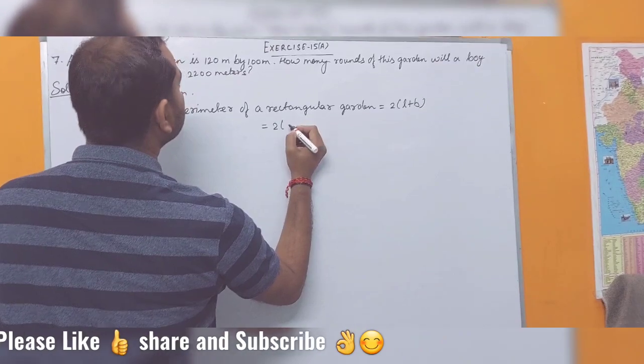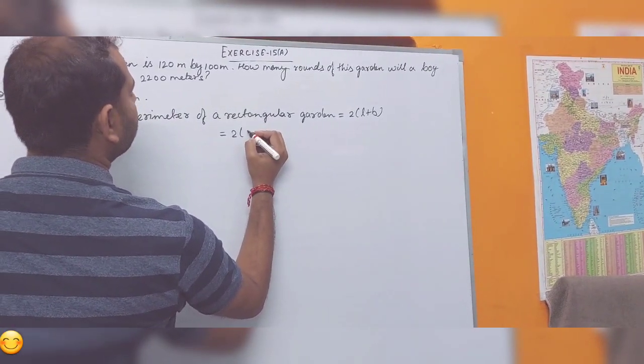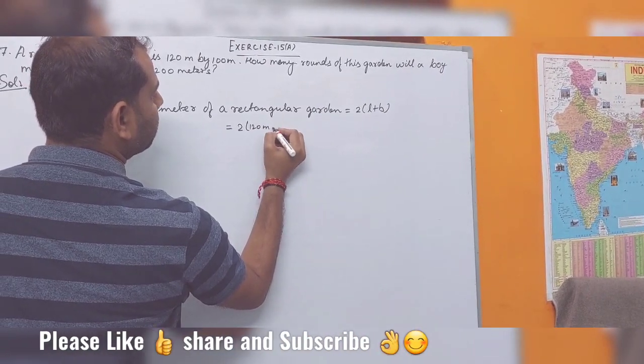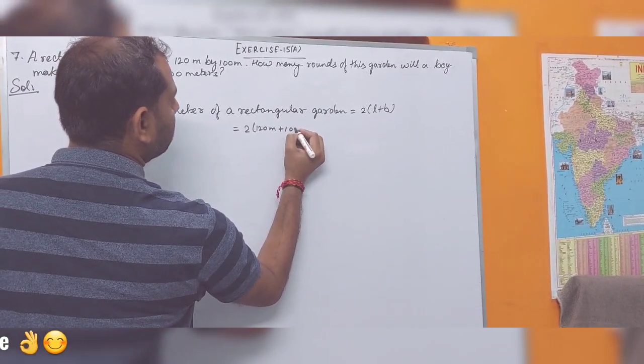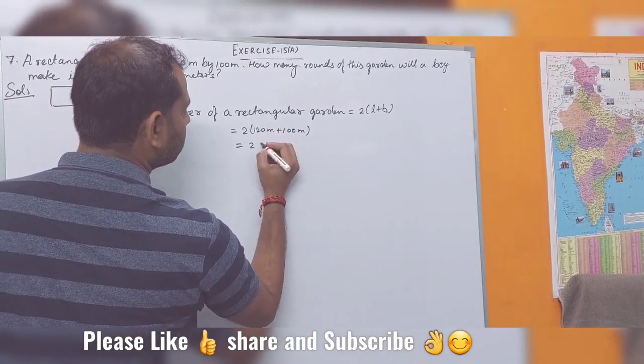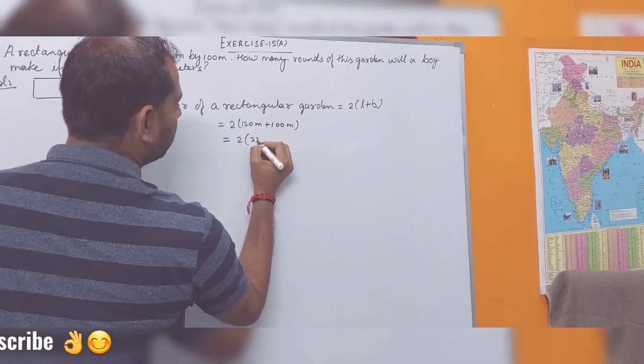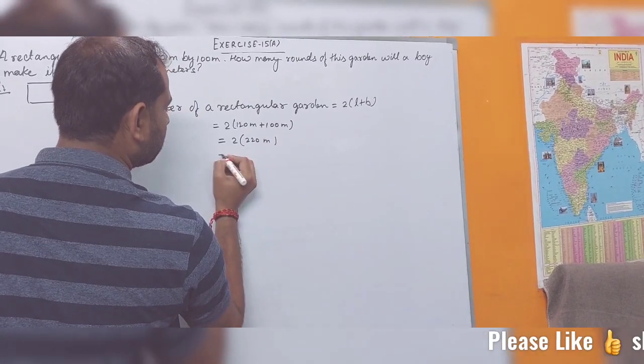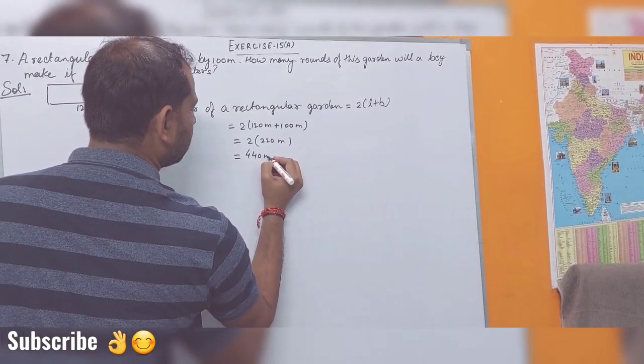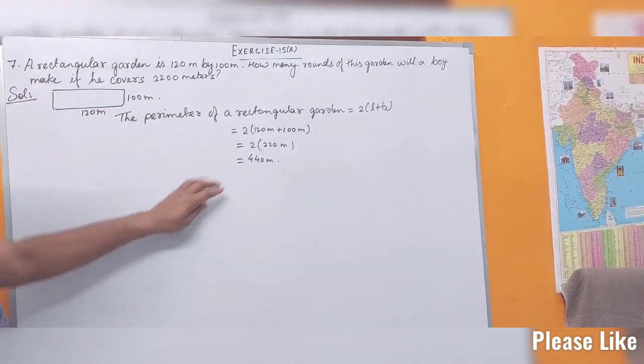120 meters plus 100 meters. The sum is 220 meters. Now multiplying, we get 440 meters. This is the perimeter of the rectangular garden.